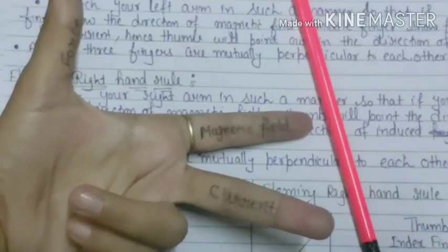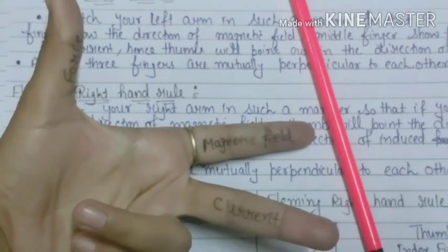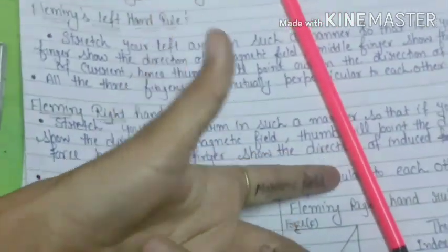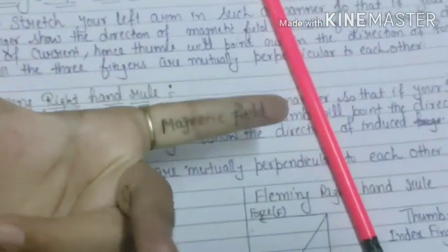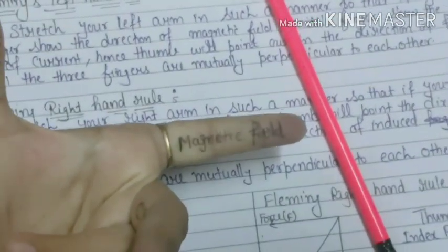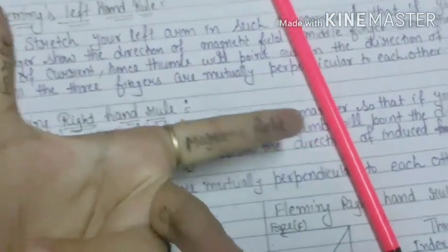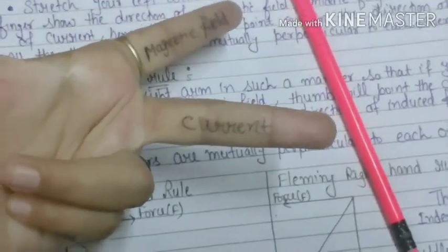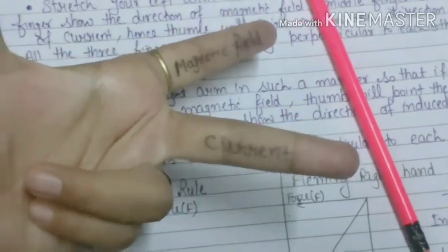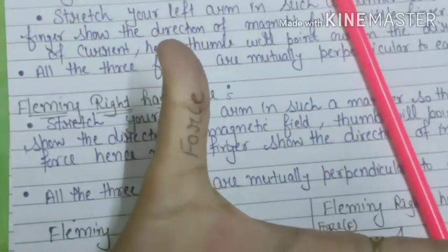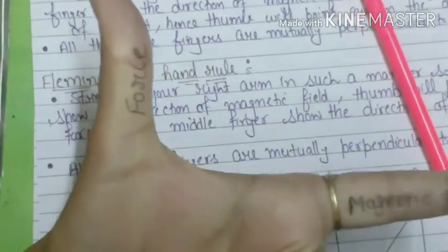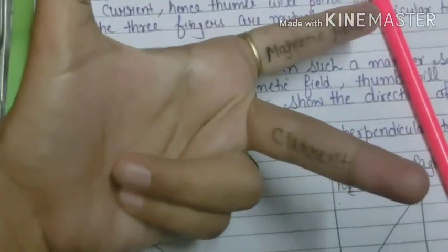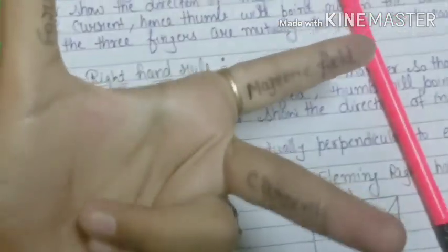Students, you have a left hand. Stretch your left arm in such a way that your first finger represents the magnetic field, the middle finger represents the current, and the thumb represents the force. So remember: Fleming's Left Hand Rule uses the left hand to find the direction of the force.